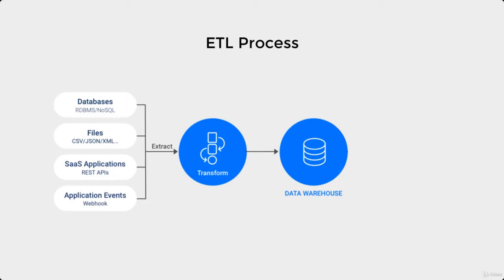So you extract your data and transform it. Once your data is well formatted and in a meaningful format, you can load it onto your server, or serve this file to your teams. That last step is called Load. This is how Power BI works — on this ETL process. That is how a data warehouse works using the ETL process.